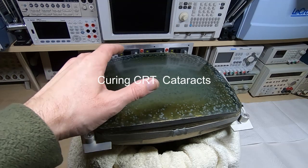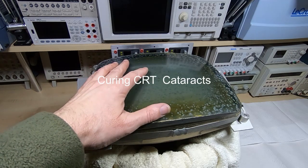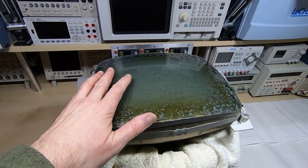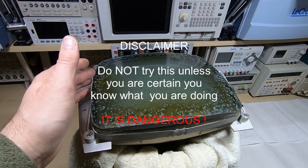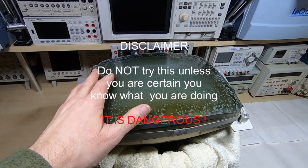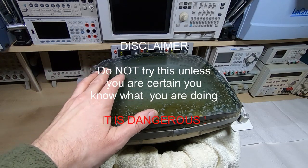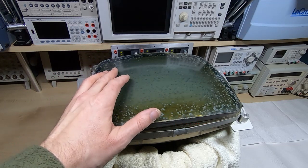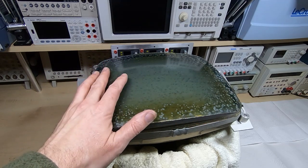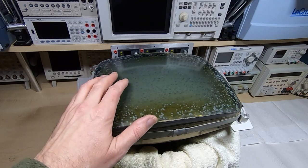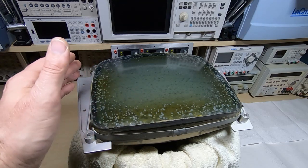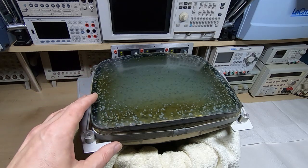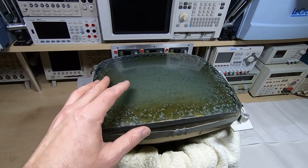In this video I'm going to show how to deal with cataracts on a CRT. This was a common problem in CRTs of the 1980s. Nine inch and twelve inch tubes especially were notorious for this on terminals. It's not a difficult thing to do, it's just quite dangerous because there is always the risk with the CRT that it could implode.